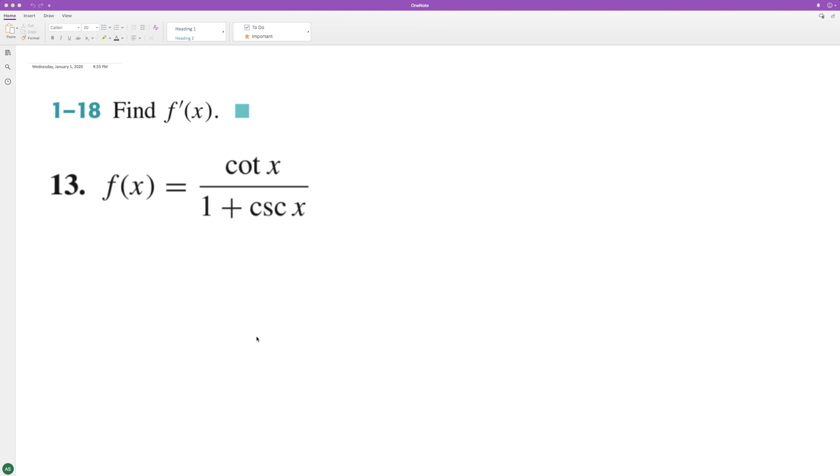Find the derivative of the following problem. We're going to use the quotient rule, so that means we're going to start off by taking the derivative of the top, cotangent of x, times the bottom.